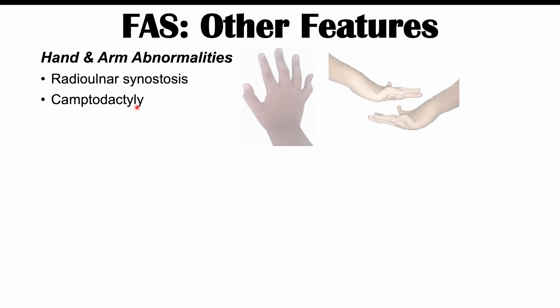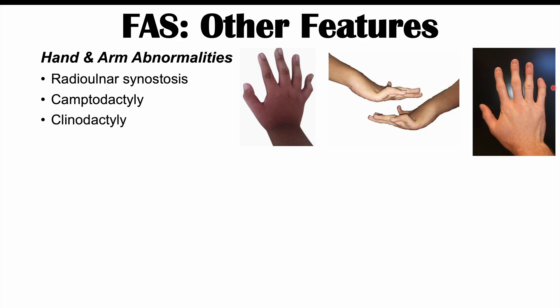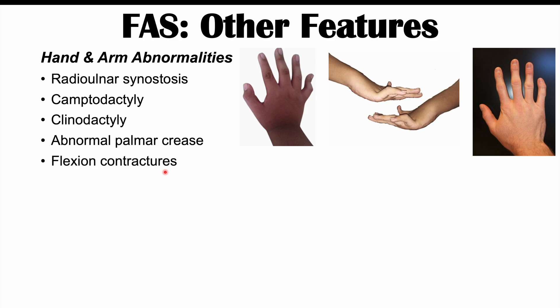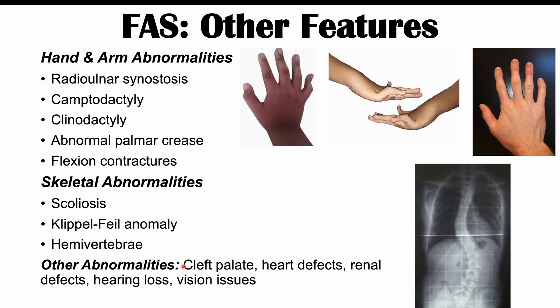Other features more commonly found in fetal alcohol syndrome patients include hand and arm abnormalities such as radio-ulnar synostosis, camptodactyly (a finger bent out of the plane of other fingers), clinodactyly (a finger bent in the plane of other fingers), abnormal palmar creases, and flexion contractures. Skeletal abnormalities include scoliosis (S-shaped spine), Klippel-Feil anomaly, and hemivertebrae. Additional findings include cleft palate, certain heart defects, renal defects, hearing loss, and vision issues.